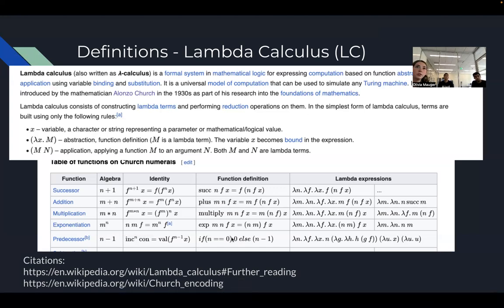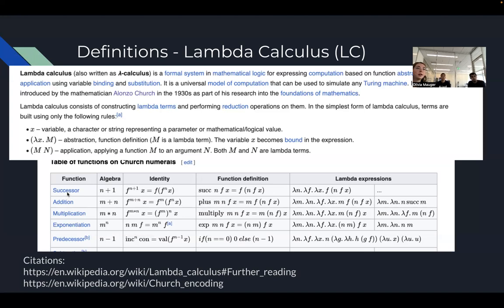The table below covers the fundamentals of lambda calculus. The two notable ones for our simulation are successor and addition — successor is just the special case of addition where m equals one. For addition of m and n, the lambda expression simulates f applied to x a certain number of n times, then does this m times to represent adding the second number to the first, mapping to natural numbers.